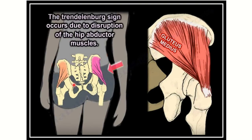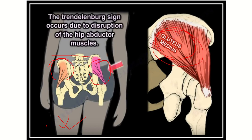Normally, the two levels of the hip bone are equal. However, during injury to the gluteus medius muscle, when the opposite leg is lifted off the ground, this muscle will not be able to maintain the normal level. The side where the leg is above the ground will droop — this is called the Trendelenburg sign. It occurs due to paralysis of the gluteus medius muscle or damage to the nerve supplying it.